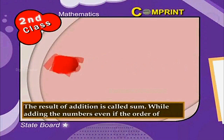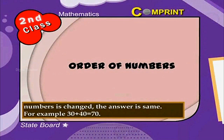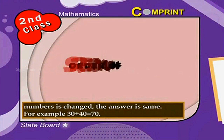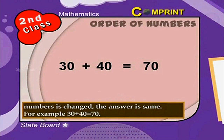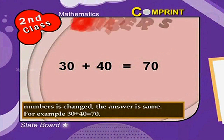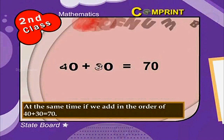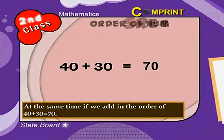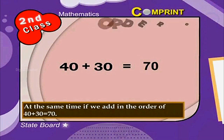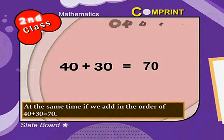While adding numbers, even if the order of numbers is changed, the answer is the same. For example, 30 plus 40 is equal to 70. At the same time, if we add in the order of 40 plus 30, the sum will be 70 only.